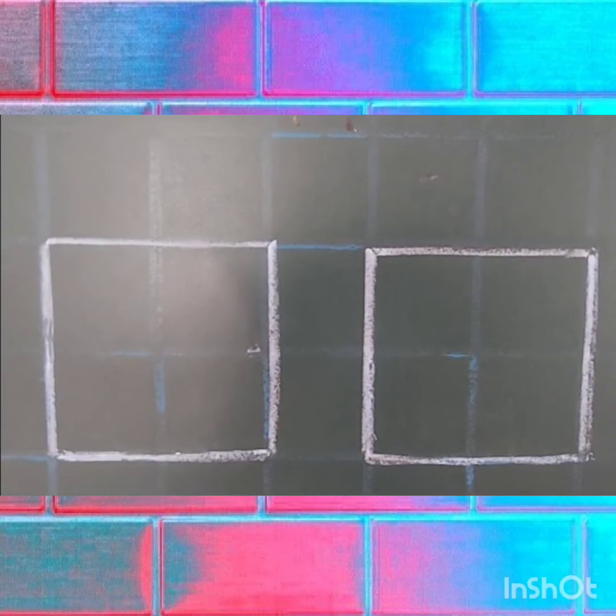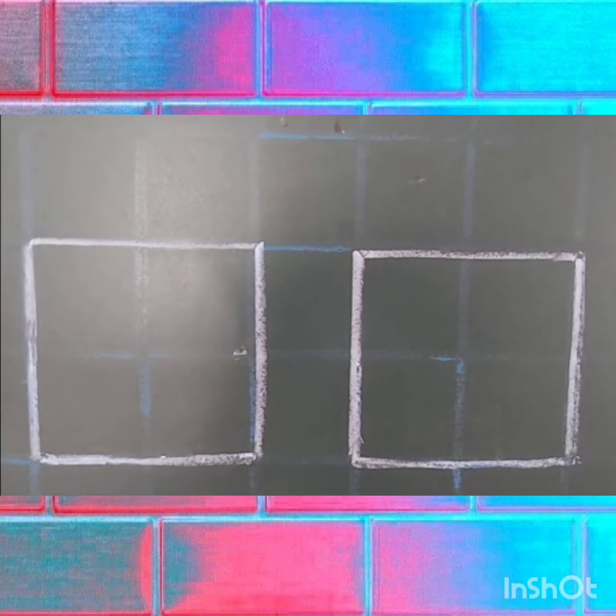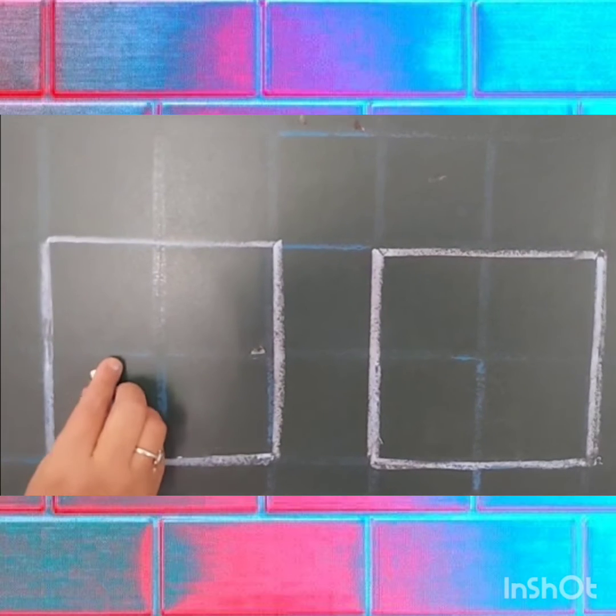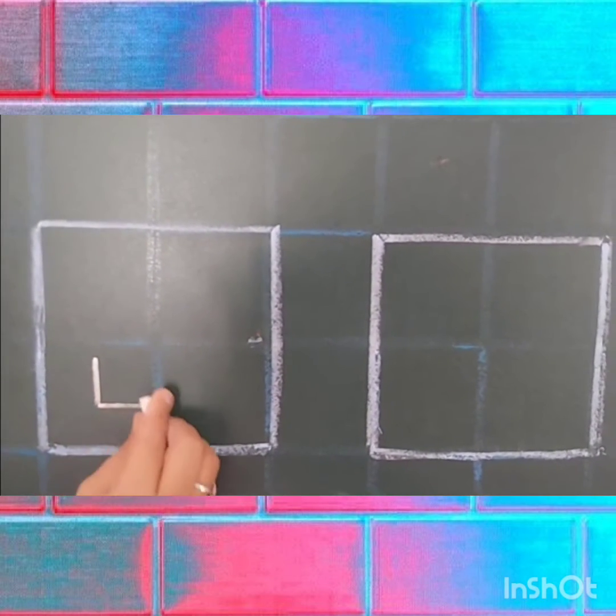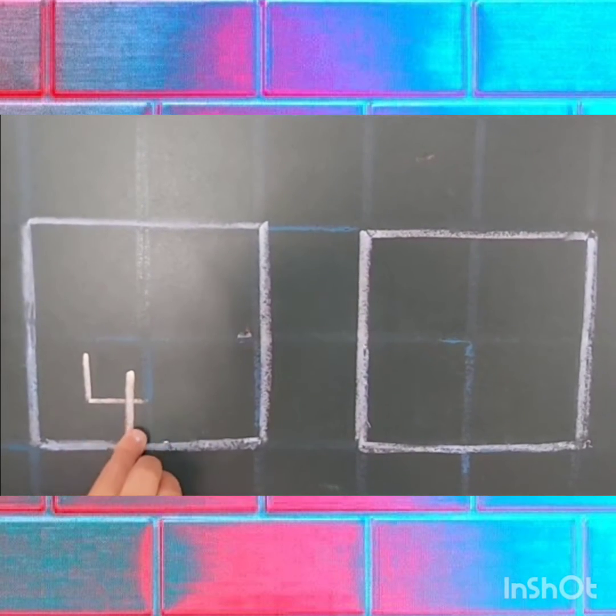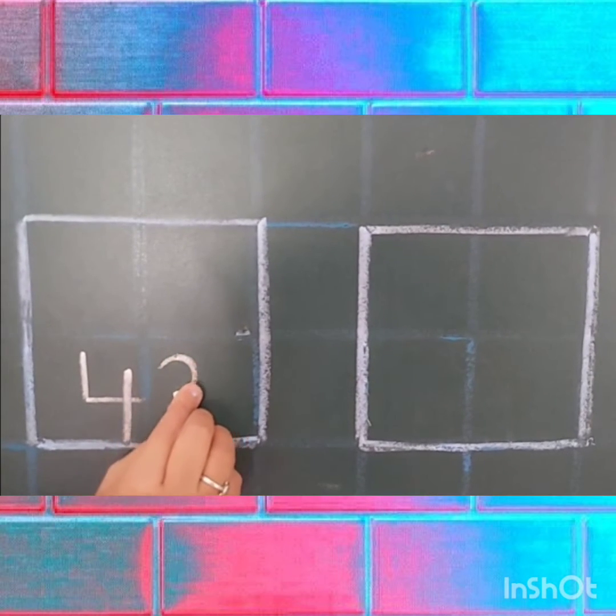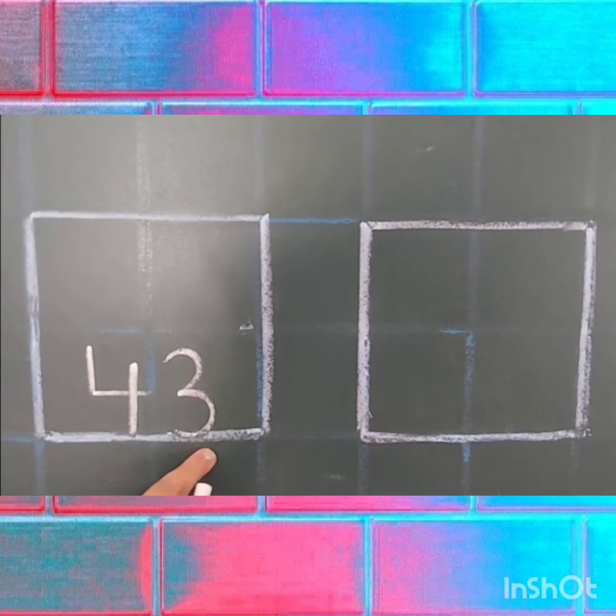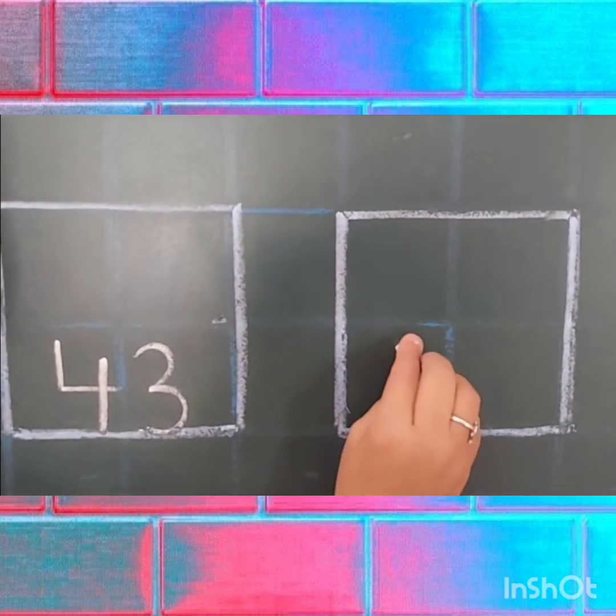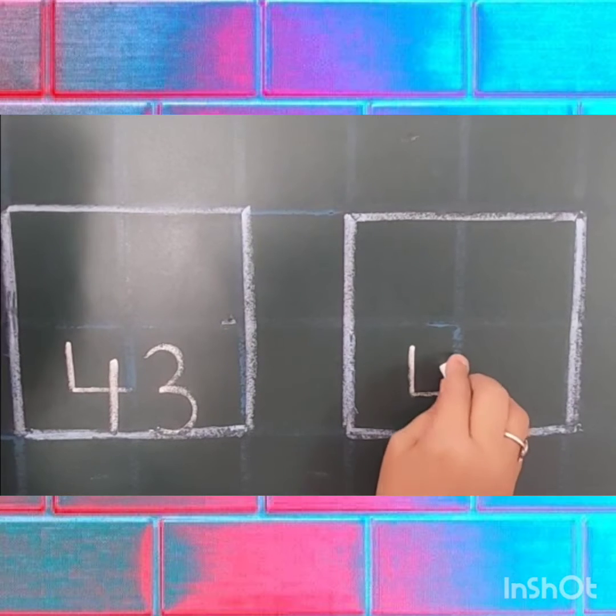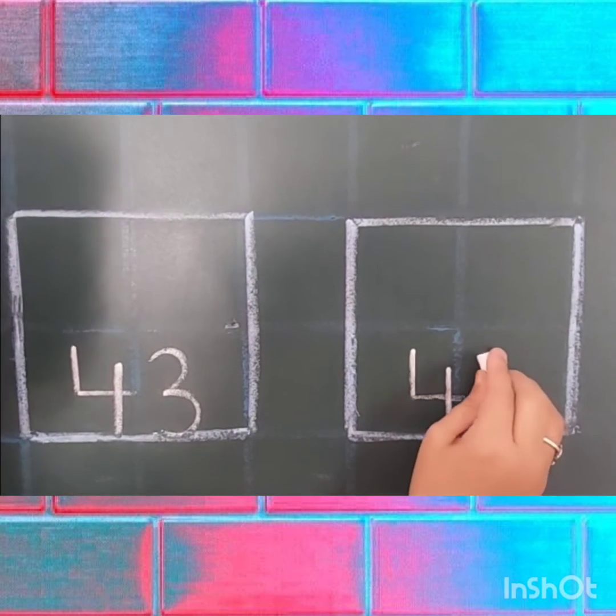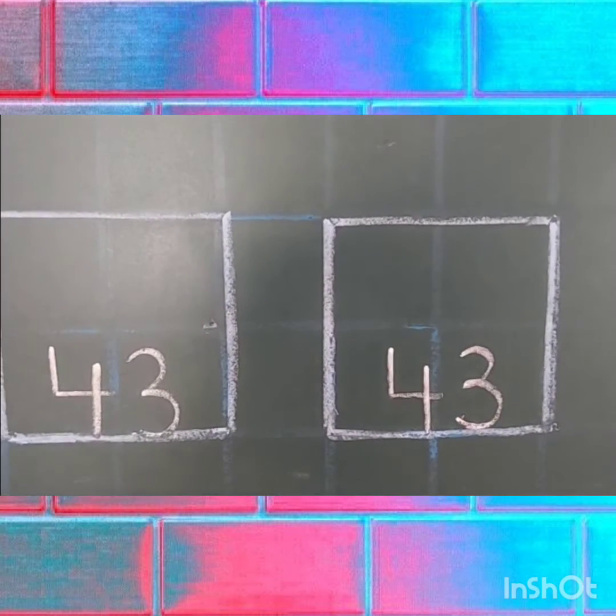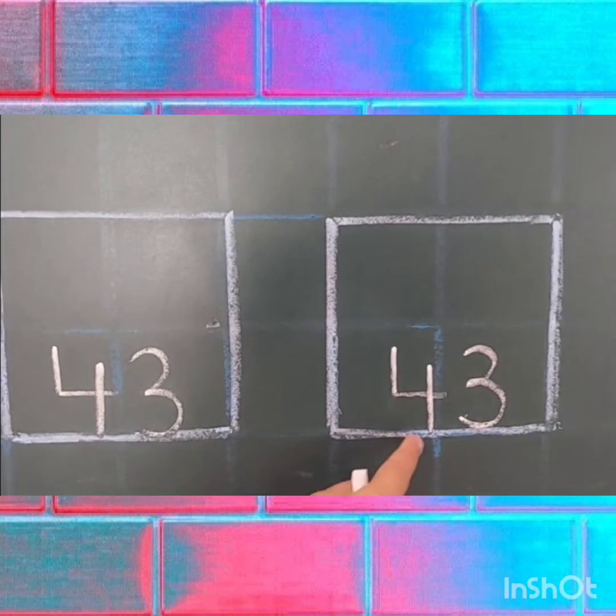Kids, now we will see how to write number 43 and 44 in square boxes. First, we will write number 43. We will write number 4, then number 3, 43. One more time. Number 4 and number 3, that's the down line. 43.